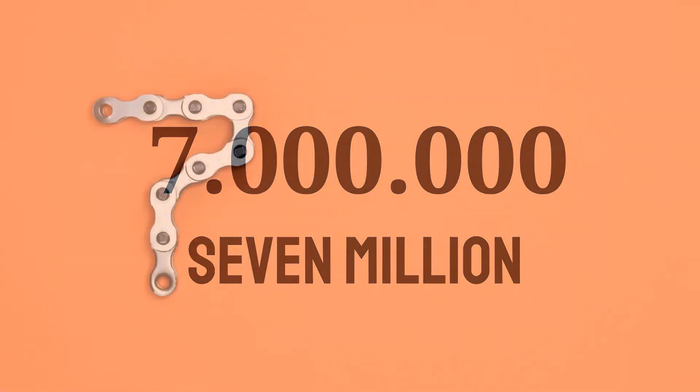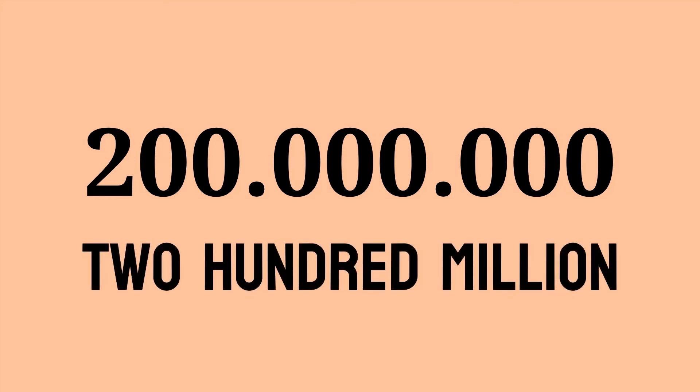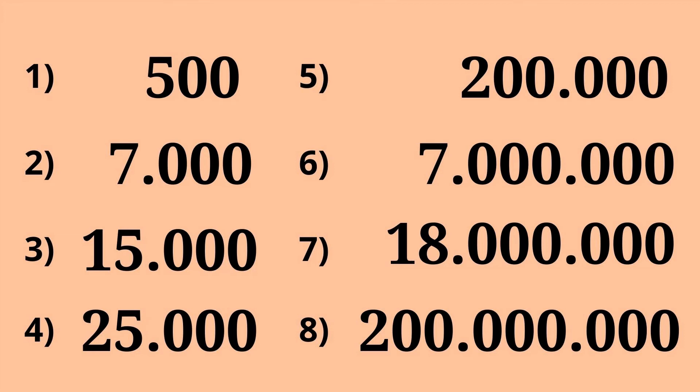The next number has six zeros, that means a million, so seven million. The next number has three zeros, three zeros, and three zeros, so eighteen million. And the last number is two hundred million. So one more time: 500, 7,000, 15,000, 25,000, 200,000, 7 million, 18 million, and the last one, 200 million.